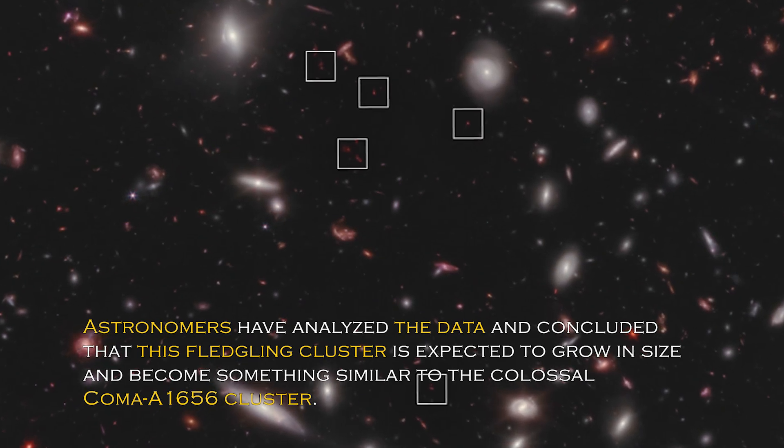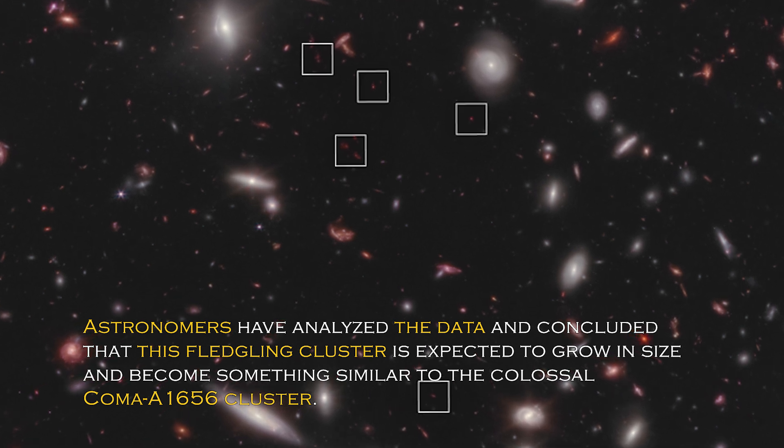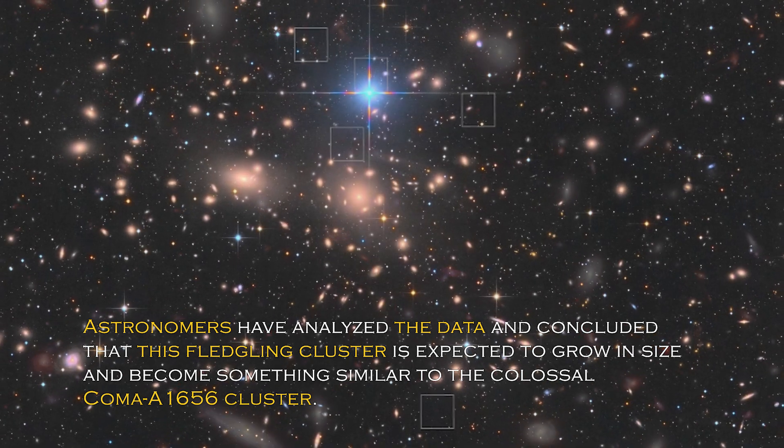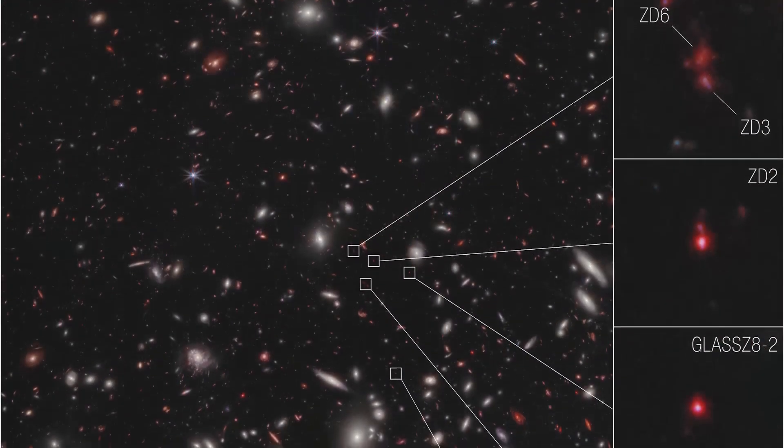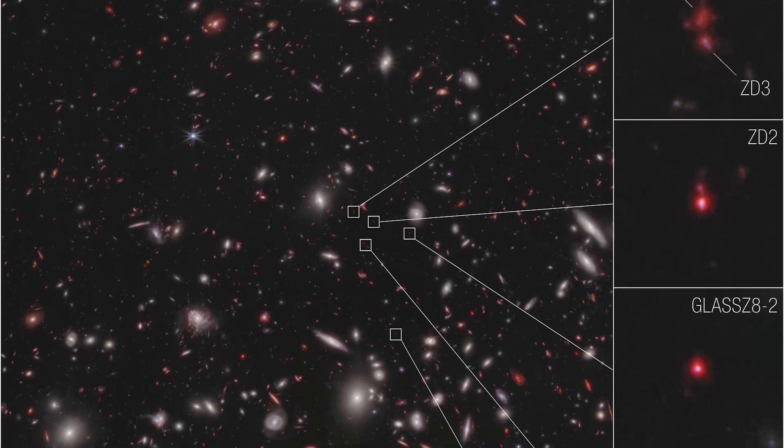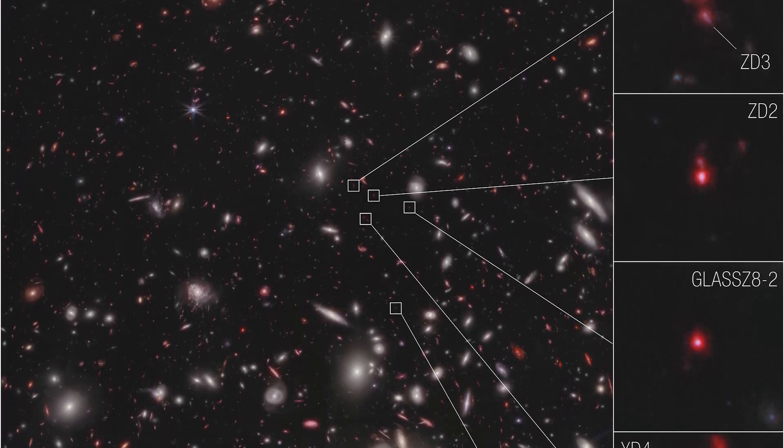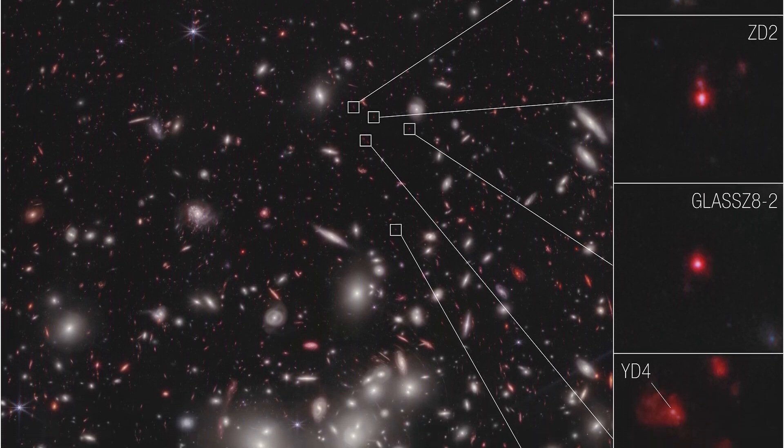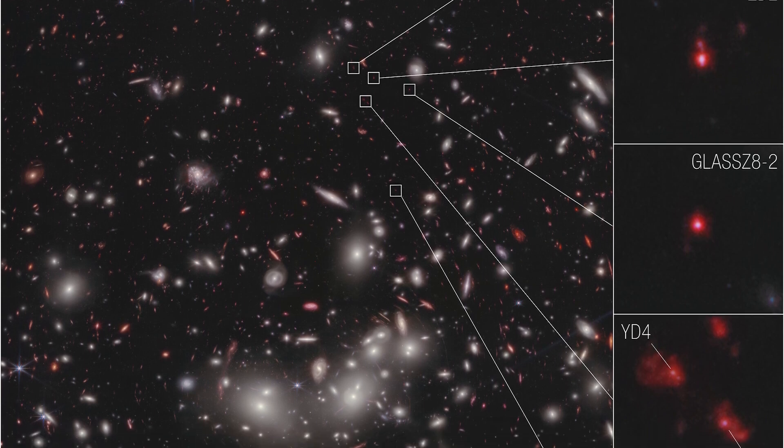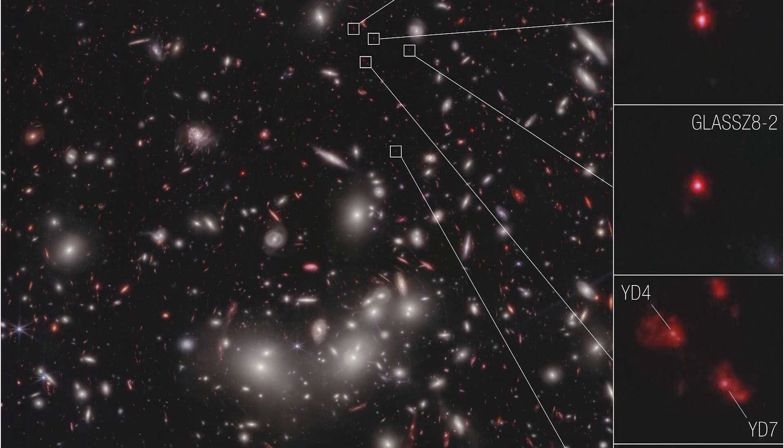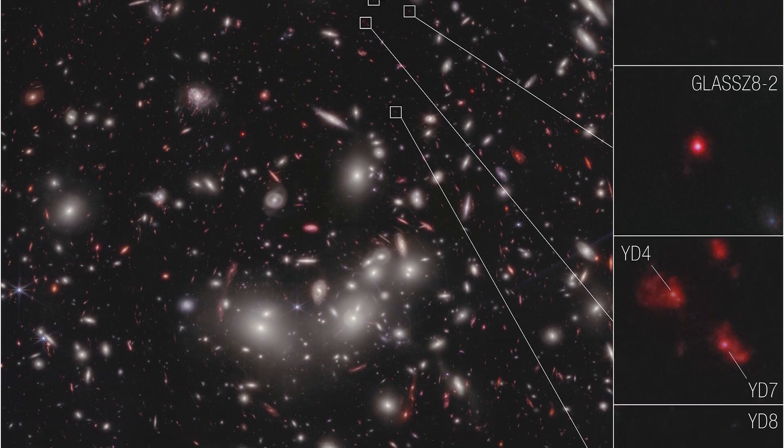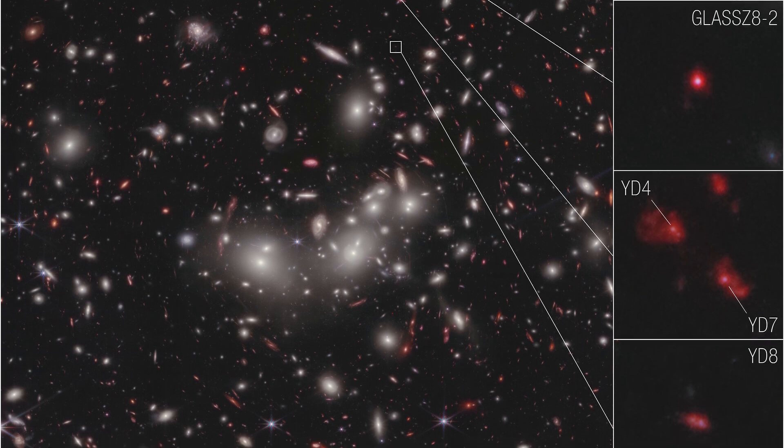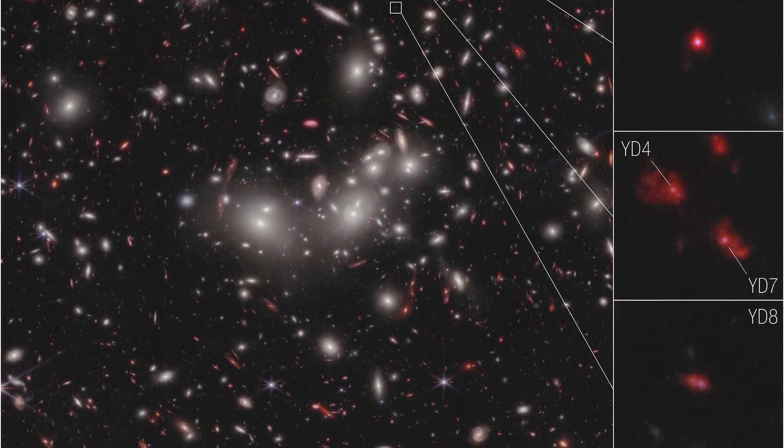Astronomers have analyzed the data and concluded that this fledgling cluster is expected to grow in size and become something similar to the colossal Coma A1656 cluster. The place where all this is taking place is unique and special, as it is in an area of accelerating galactic evolution thanks to the James Webb Space Telescope. Now researchers can measure the velocities of these seven galaxies, which gives them the confidence to confirm that they are bounded together in a protocluster. To put this in perspective, NASA scientists compared these distant galaxies to small drops of water in different rivers that will eventually join together to form a large, powerful river.